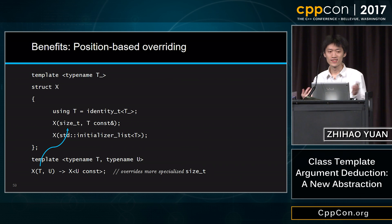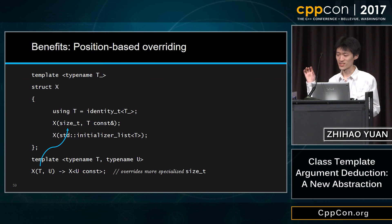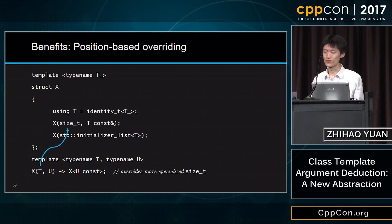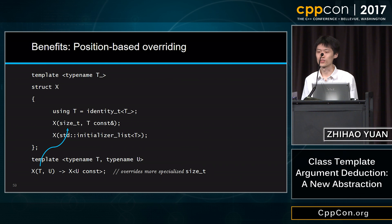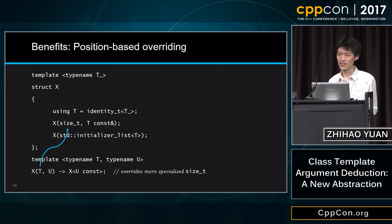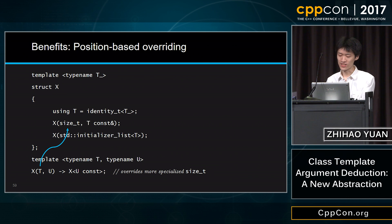It turns out we can fix this with a deduction guide: when the input is a pointer to a character array, we deduce to `std::string`. A deduction guide is merely a declaration — it doesn't have to start with a template. If you're familiar with how templates work in C++, a template is just a declaration prefixed by a template head; if the declaration is a `using` declaration, that becomes an alias template. Deduction guides are the same — by itself, it's still a deduction guide; you can use it to map concrete types from one to another.